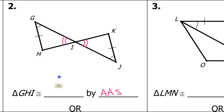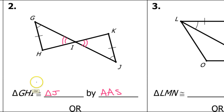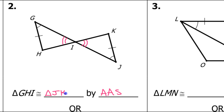So triangle GHI will be congruent to triangle — G clearly corresponds with J, you can tell because of the way they're marked. H is blank, so that corresponds with K. And I corresponds with I. So there you go.